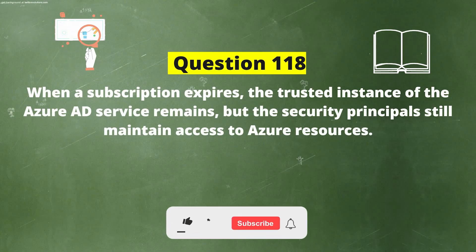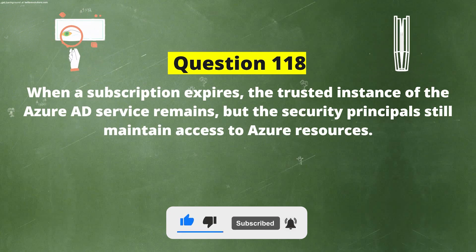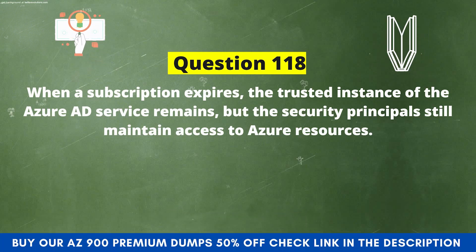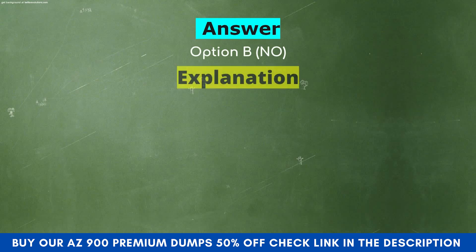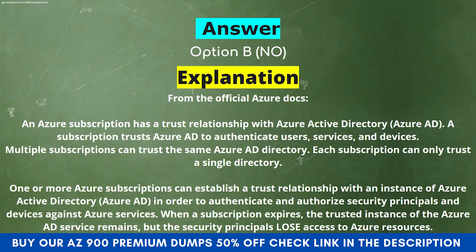Next question. When a subscription expires, the trusted instance of the Azure AD service remains, but the security principles still maintain access to Azure resources. Option A: Yes. Option B: No. The correct answer is Option B, No. An Azure subscription has a trust relationship with Azure Active Directory. A subscription trusts Azure AD to authenticate users, services, and devices. Multiple subscriptions can trust the same Azure AD directory, but each subscription can only trust a single directory. When a subscription expires, the trusted instance of the Azure AD service remains, but the security principals lose access to Azure resources.